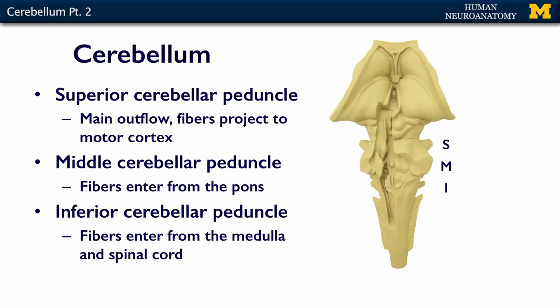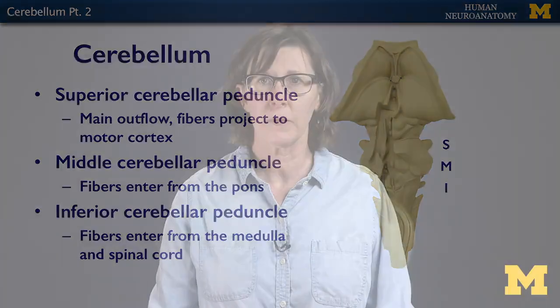The inferior cerebellar peduncle is bringing in afferent information from the medulla and the spinal cord. These peduncles and the information each carries will be important in the next couple of sections when we talk about the actual functioning of the cerebellum. For now, what I want you to know is that there are three different peduncles, and each one is bringing in or taking away information from a different source.